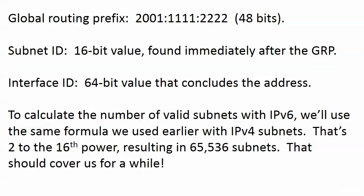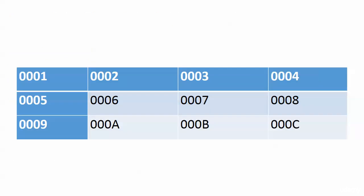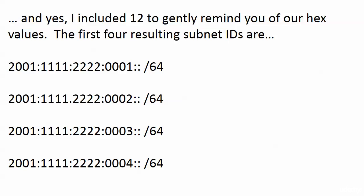Determining the subnet IDs is easy. Once you know where the 48-bit GRP is and the 64-bit interface ID at the end, your subnet ID is right in the middle — the fourth block from left to right represents subnets. You can start writing them out, or on the job use a spreadsheet. If the IANA goes to all this trouble of being super organized, we should do the same. The first subnets start with 0, 1, 2, 3, 4, 5, 6, 7, 8, 9, then A, B, C, D, E, F — a gentle reminder that we're using hexadecimal values here.